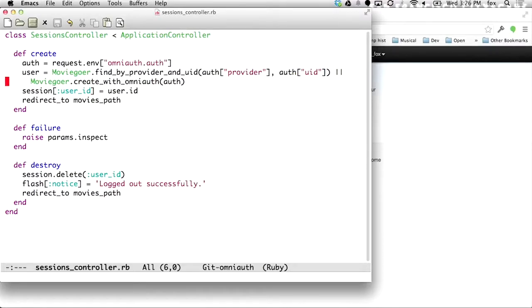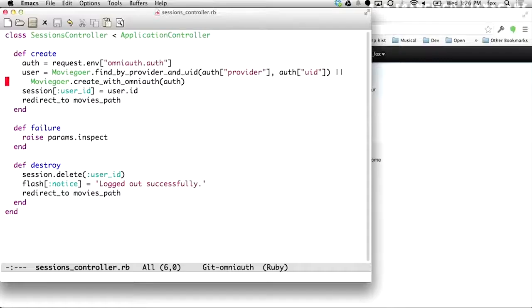If not, what it might mean is that this user has never logged in before. I have no record of this person existing. So, I will create them and we're going to, in a minute, we're going to look at this create with OmniAuth method.